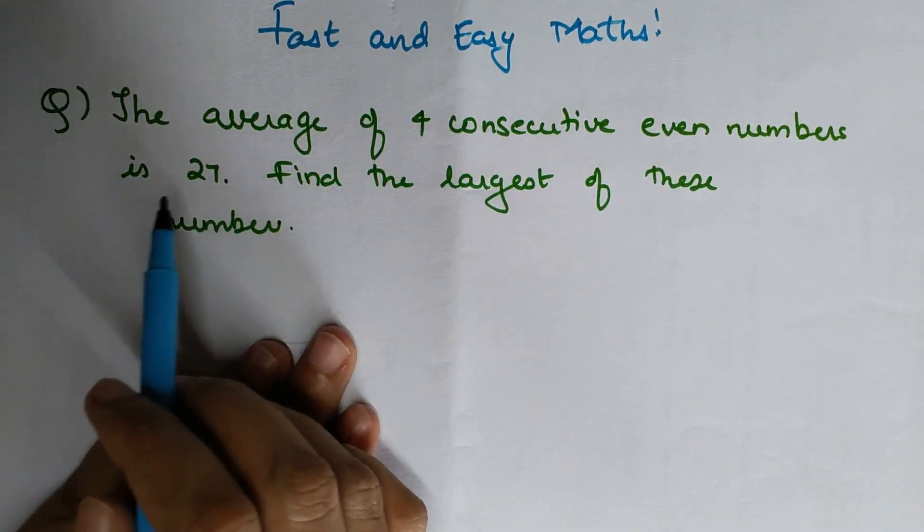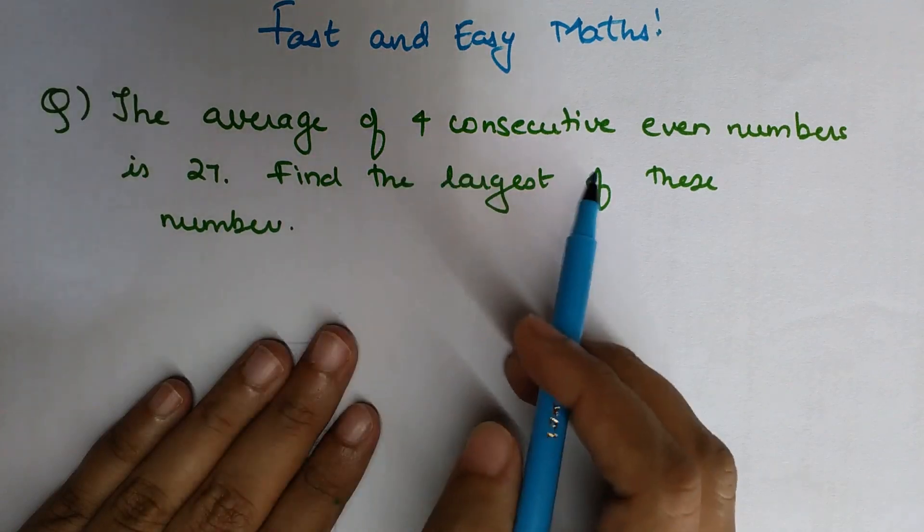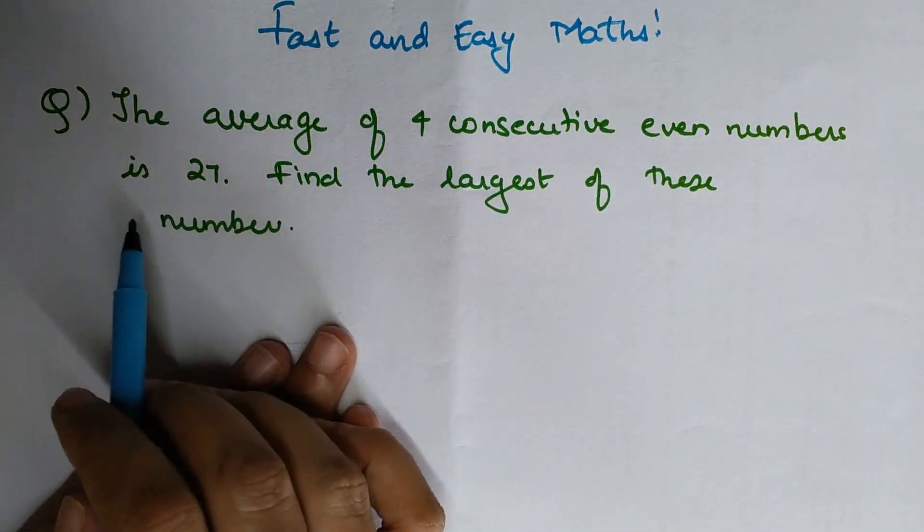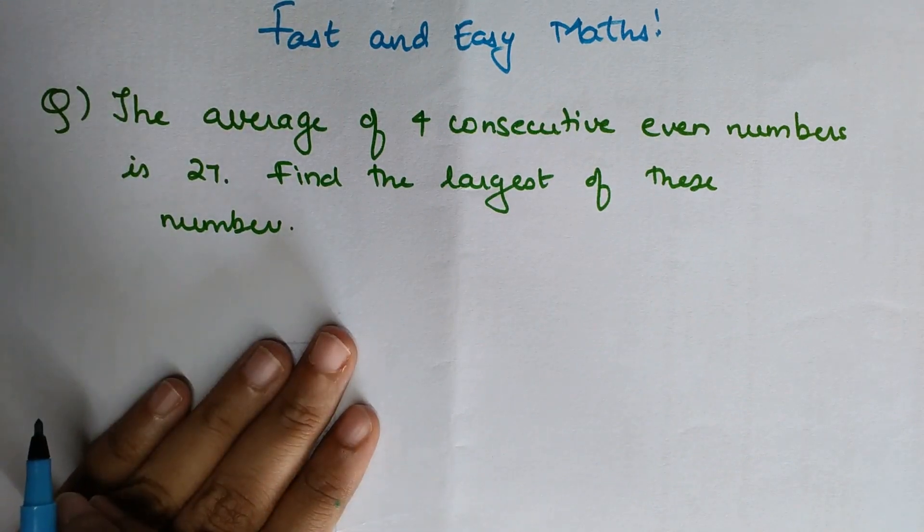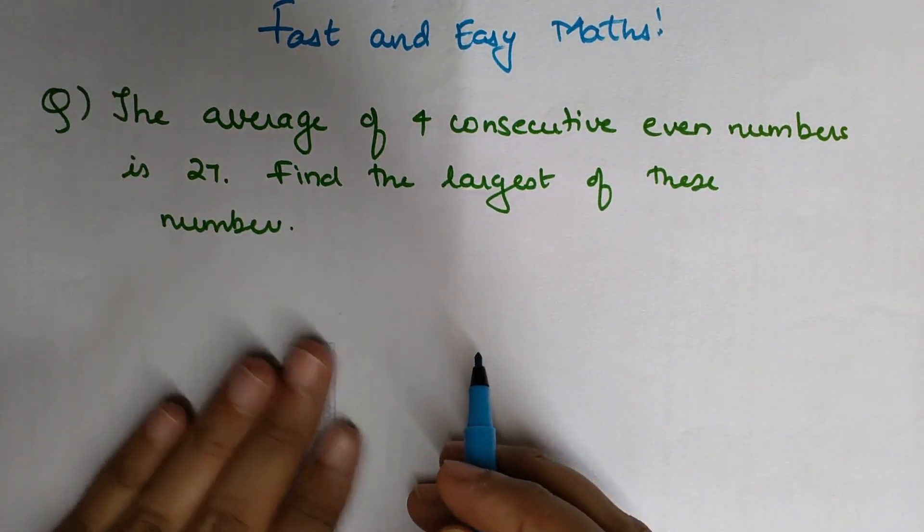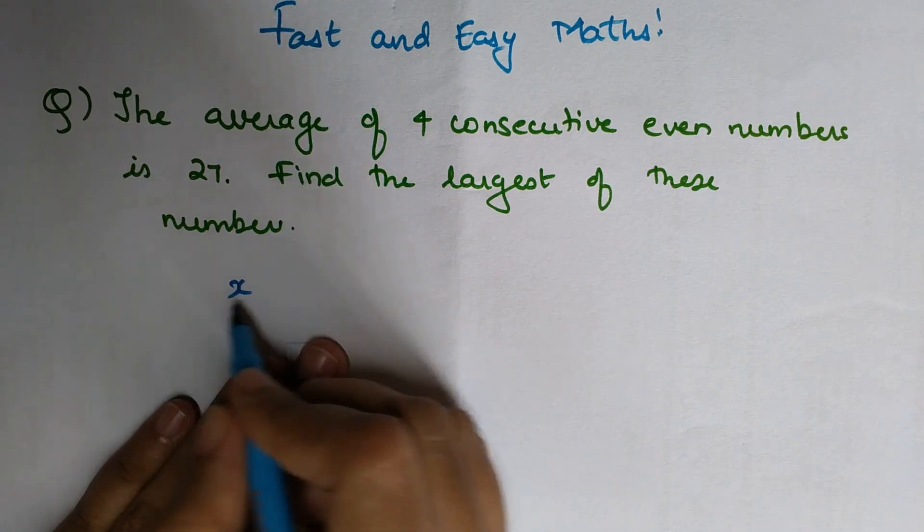Let's first read the first question: The average of four consecutive even numbers is 27. Find the largest of these numbers. Okay, so the first thing is, let the first number be x.